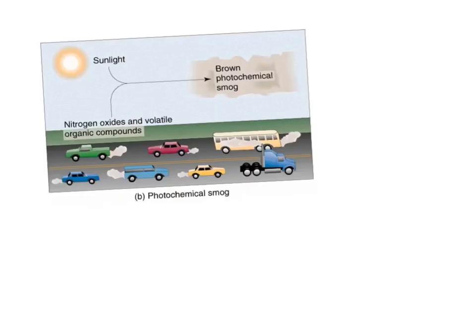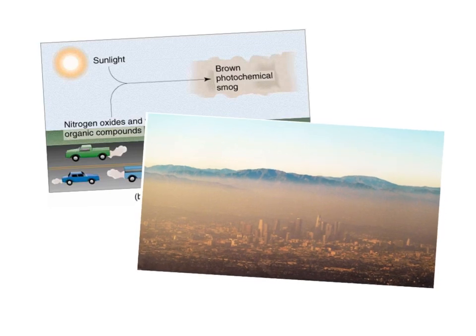That reaction between nitrogen oxides, volatile organic compounds, and sunlight creates a type of smog called brown photochemical smog — dominated by these oxidants like ozone — and it actually looks pretty brown. Here's a picture of LA, which is known for being pretty smoggy. LA has a lot of car traffic that produces nitrogen oxides and volatile organic compounds, which then create this brown photochemical smog.